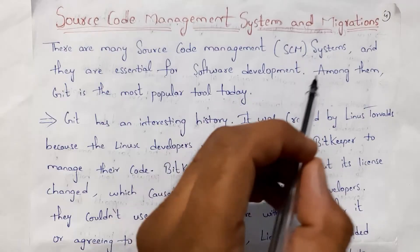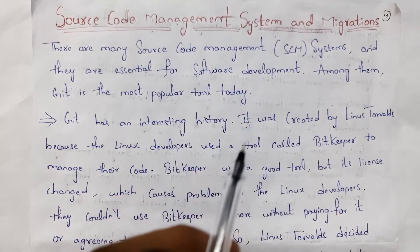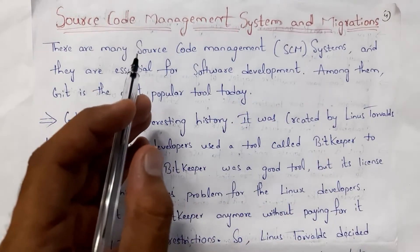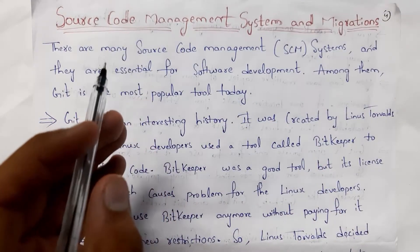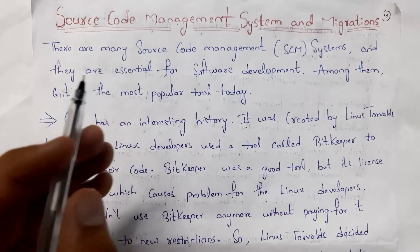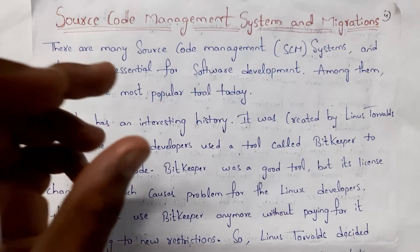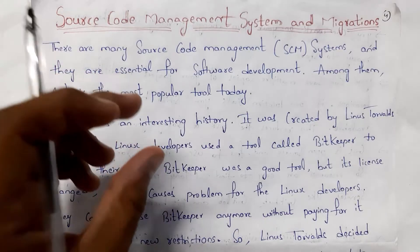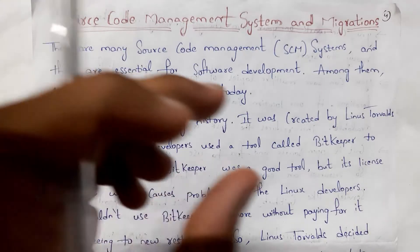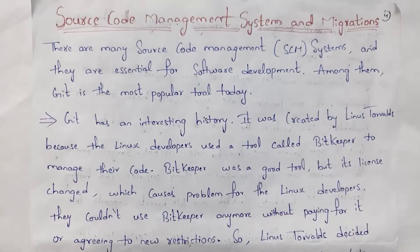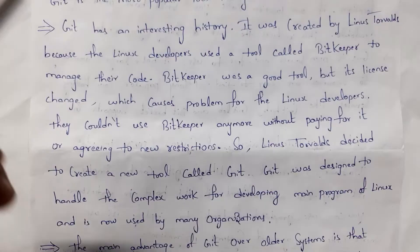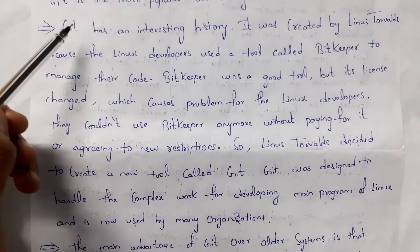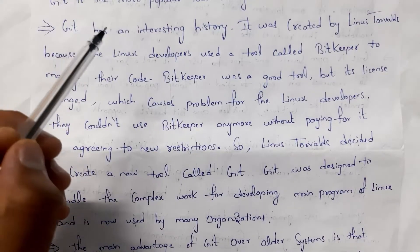There are many source code management systems and they are very important for software development, because whenever any developer writes code, they first store that code in a source code management system. Git is one of the most popular source code management systems.